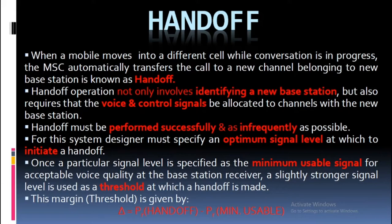Handoff must be performed successfully and as infrequently as possible. The system designer must specify an optimum signal level at which to initiate a handoff. Once a minimum usable signal level for acceptable voice quality at the base station receiver is specified, a slightly stronger signal level is used as a threshold at which a handoff is made. This margin threshold is given by delta equals PR_handoff.